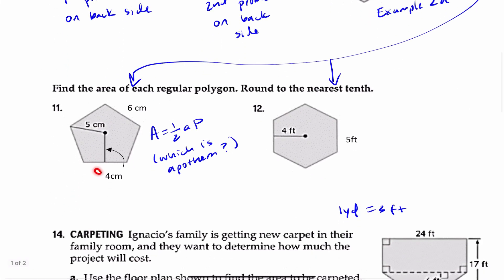And then number 11, to figure out that problem, it's the area equals one-half multiplied by the apothem multiplied by the perimeter. Now, the question here is, which one is the apothem? So please make sure that you're being very careful on number 11. And then number 12 should be pretty straightforward.